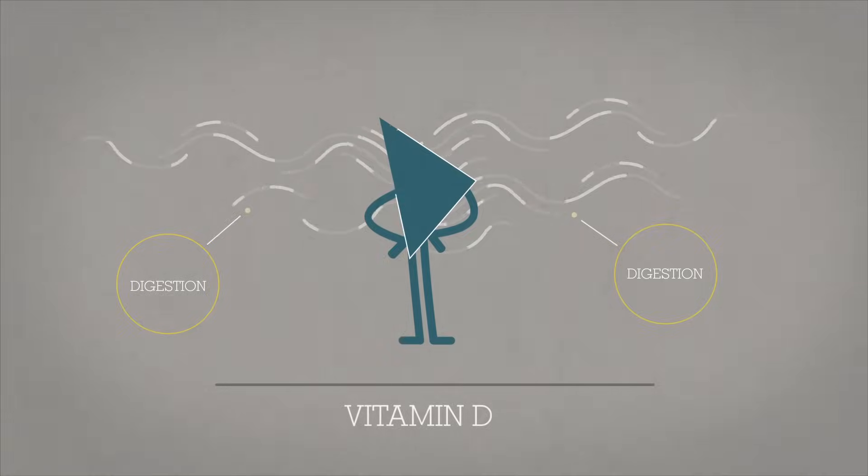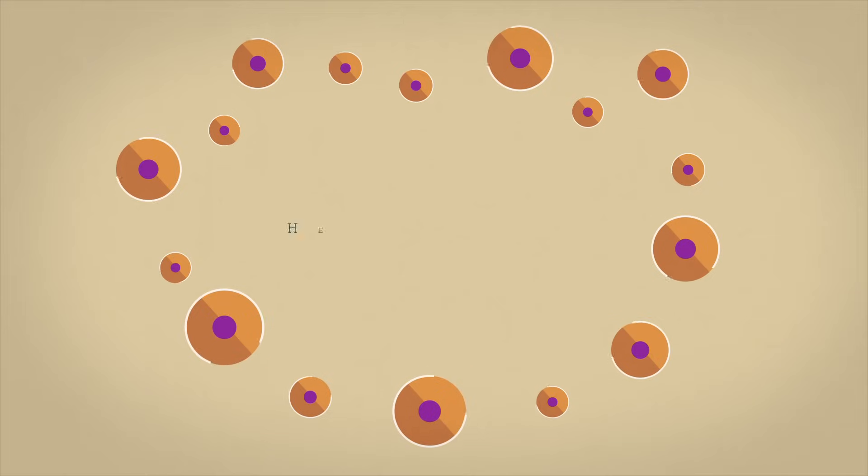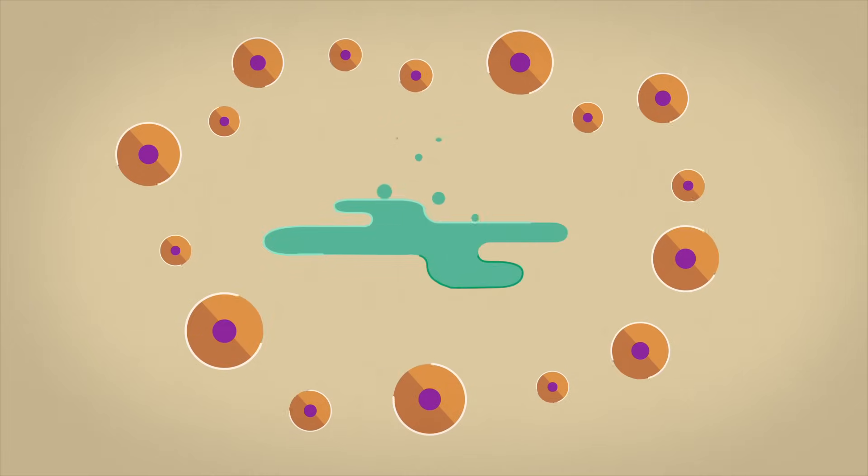But one of its most vital products is bile. Like an eco-friendly treatment plant, the liver uses cells called hepatocytes to convert toxic waste products into this bitter greenish liquid.